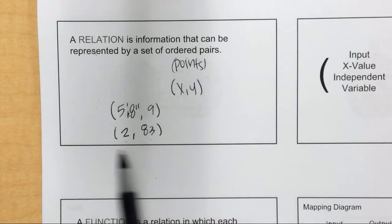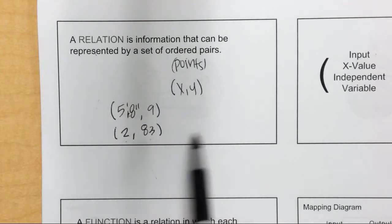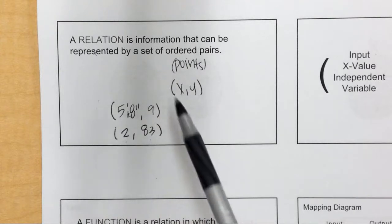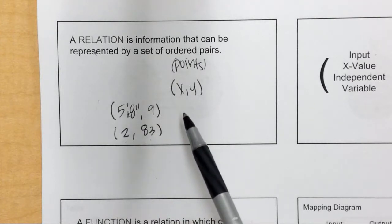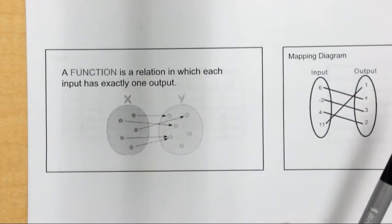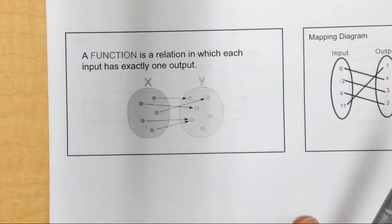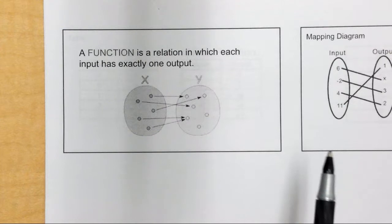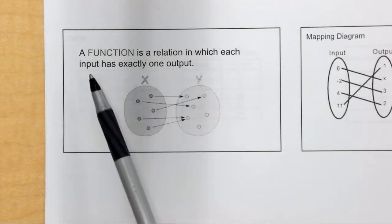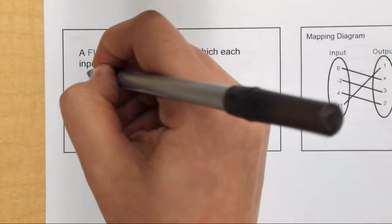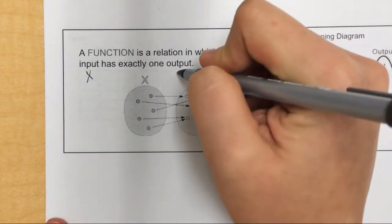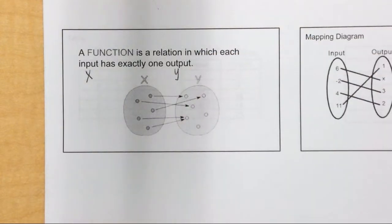Relations are good and dandy, but lots and lots of things can be a relation — it's a big, huge category. So our second definition is what is called a function. A function is a specific type of relation — a relation in which each input, meaning each x value, has exactly one output for y.